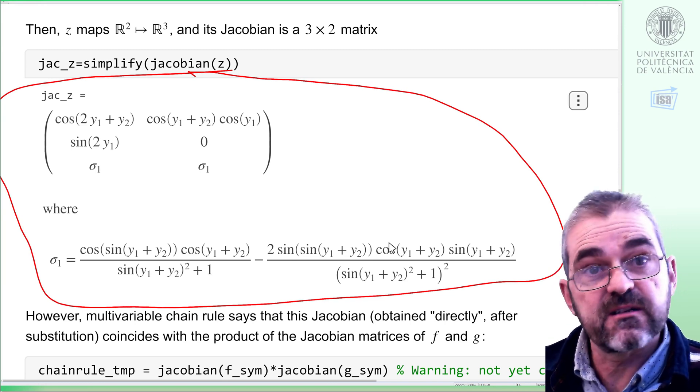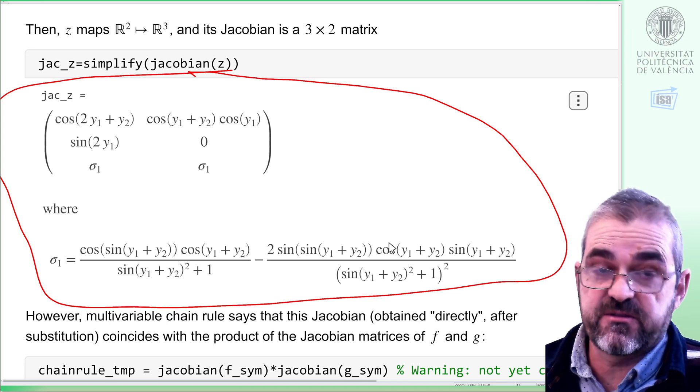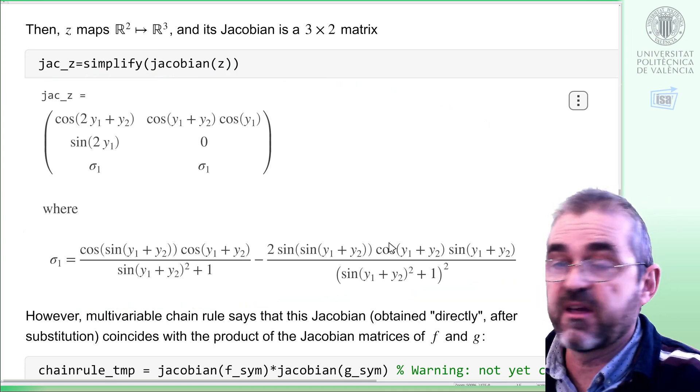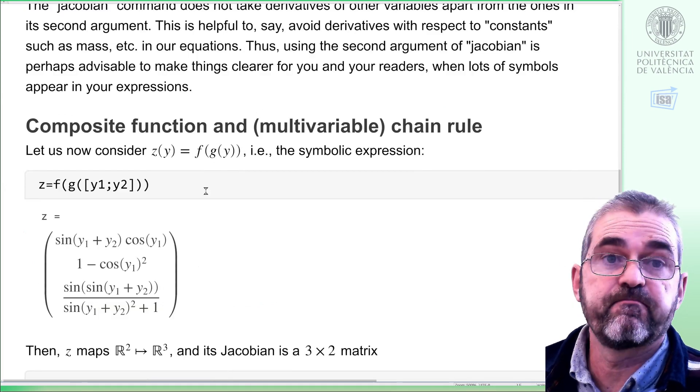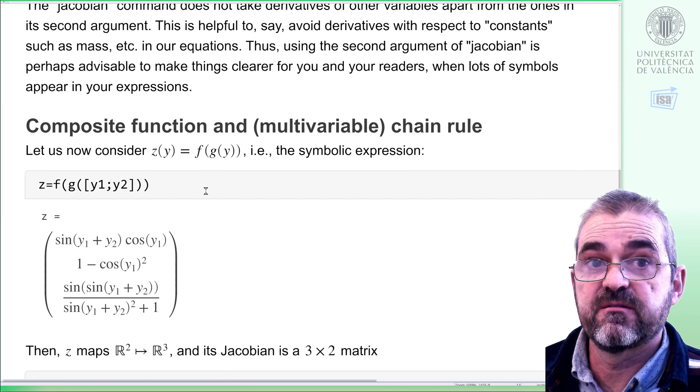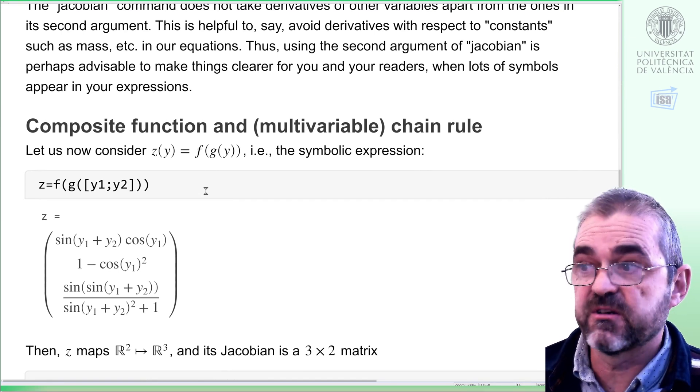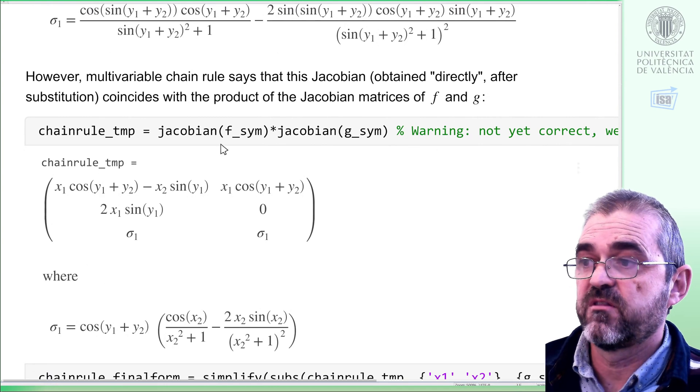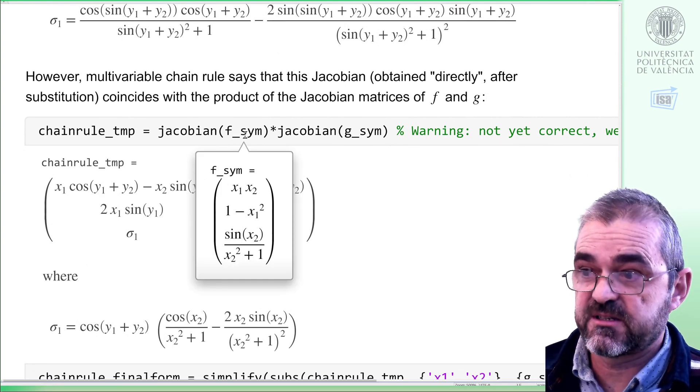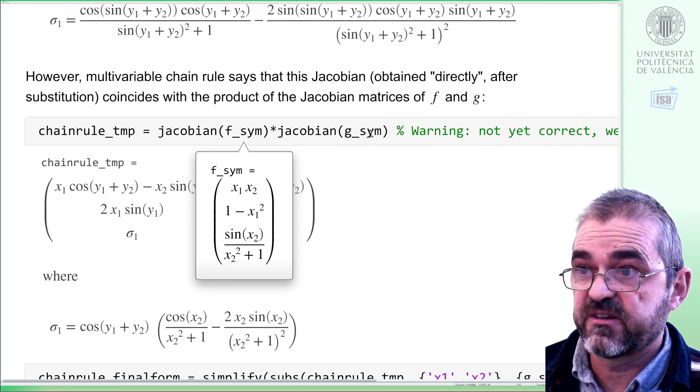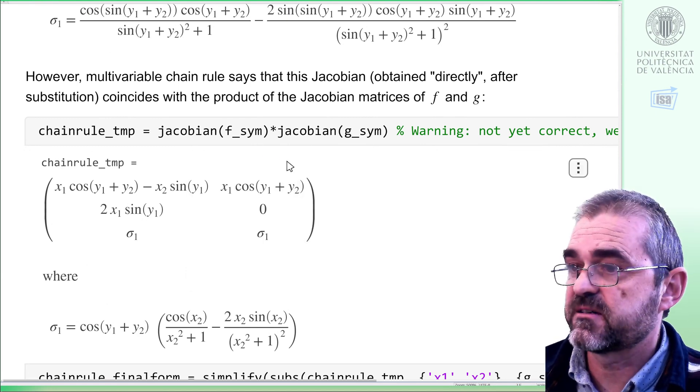So, how can we obtain exactly the same result with the chain rule if we know the derivatives, the Jacobians, of the constituent functions f and g? Well, chain rule tells us that the product of the Jacobians will give us the Jacobian of z. The product of the Jacobians of f, which is this stuff, and the Jacobian of g, which is this stuff, is this matrix.